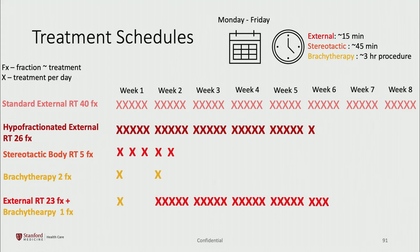Currently the eight-week schedule is more rarely used — it's an older schedule — and we typically use the six-week or the one-and-a-half-week treatment schedule for external radiation. Brachytherapy is typically performed over two sessions, or one session if combined with external radiation.